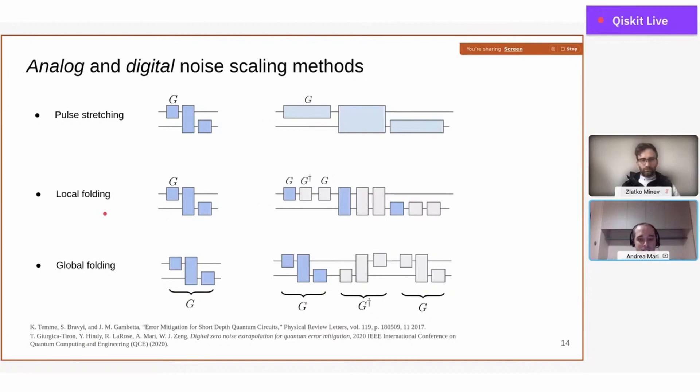The techniques that are used mainly in Mitiq are these two. The first is called local folding, and the second is global folding. In local folding, each gate G is replaced by G, G dagger, G. Since G dagger G is the identity, basically you are in principle doing nothing to the circuit if you have an ideal simulator. But in practice, if you use a real device, you are increasing the noise.